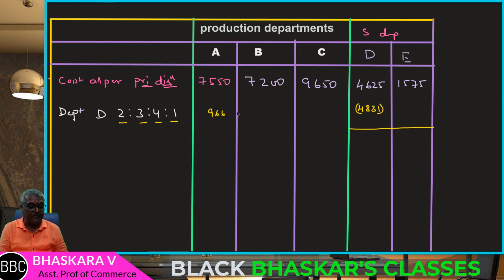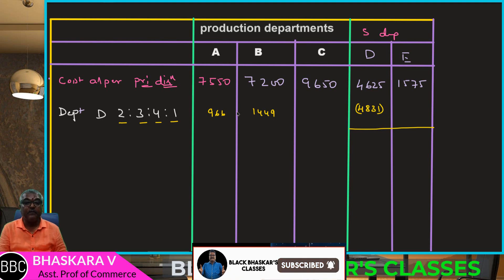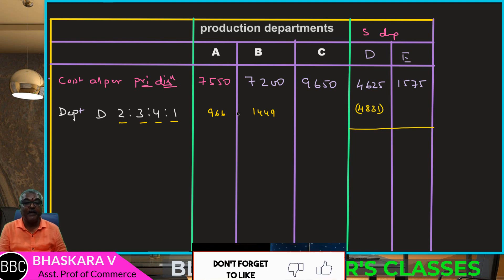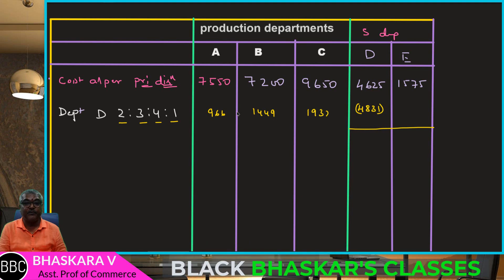Then ratio 3 gives 1,449, and ratio 4 gives 1,932. So the four shares of Department D's overheads are distributed accordingly.